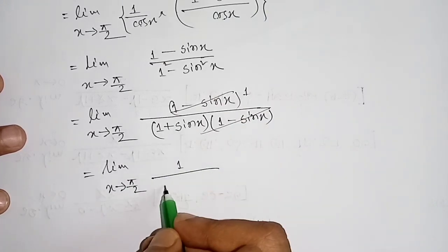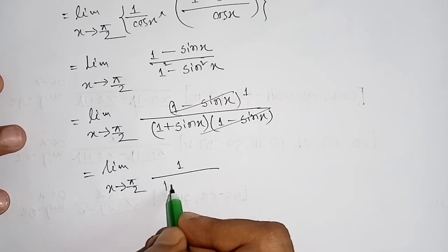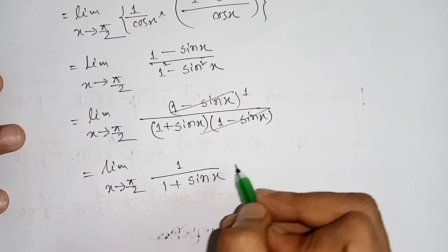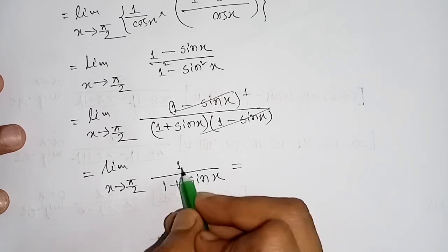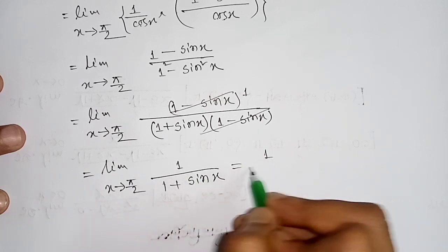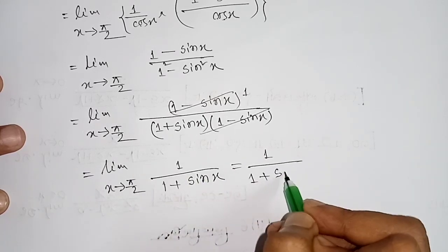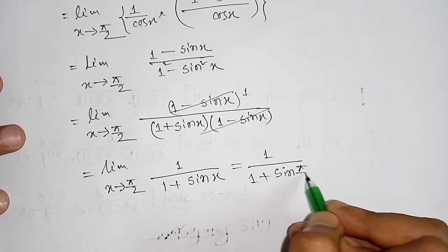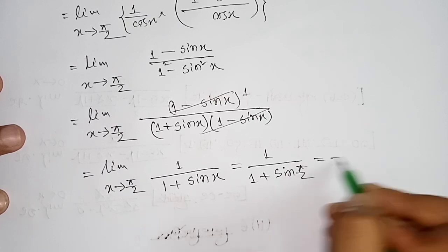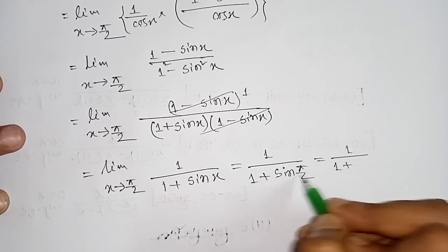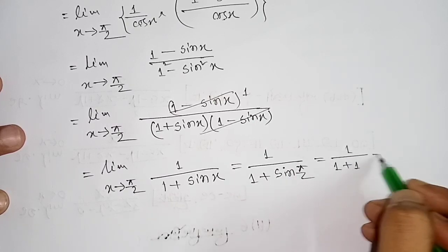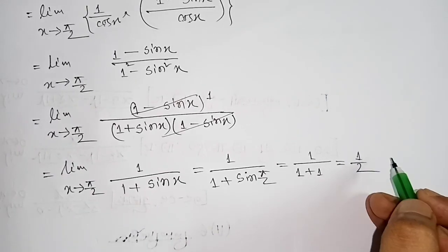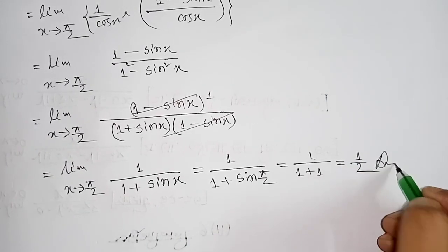Now substituting x = π/2: the numerator is 1, and the denominator is 1 plus sin(π/2) = 1 plus 1 = 2. So the answer is 1/2.